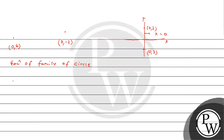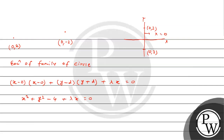Ab hum log us concept mein aayenge. That is: (x - x1)(x - x2) + (y - y1)(y - y2) + λx = 0, and both points se pass hone wali line ka equation λx = 0. Now the equation reduces to: x² + y² - 4 + λx = 0.